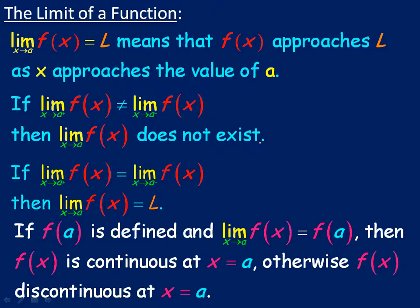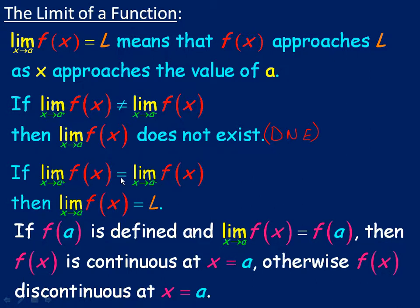There's a mathematical abbreviation — DNE — that you might see in textbooks, which stands for 'does not exist.' We're only talking about the same point here: if the left-hand limit and the right-hand limit both equal the value L as x approaches a, then we say the limit of the function as x approaches a is equal to L.